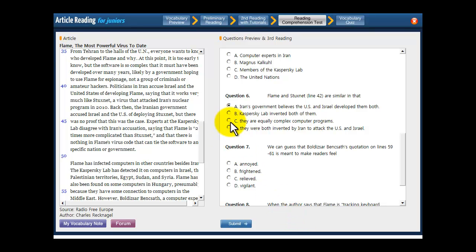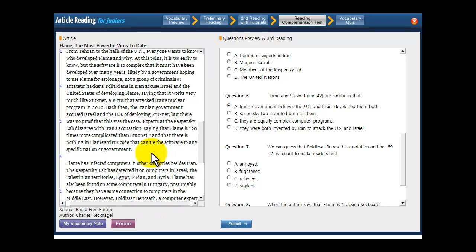What about C? They are equally complex computer programs. Well, like we just said, the Kapersky Lab people say that Flame is 20 times more complicated than Stuxnet, right there. See it? Keep it on A.